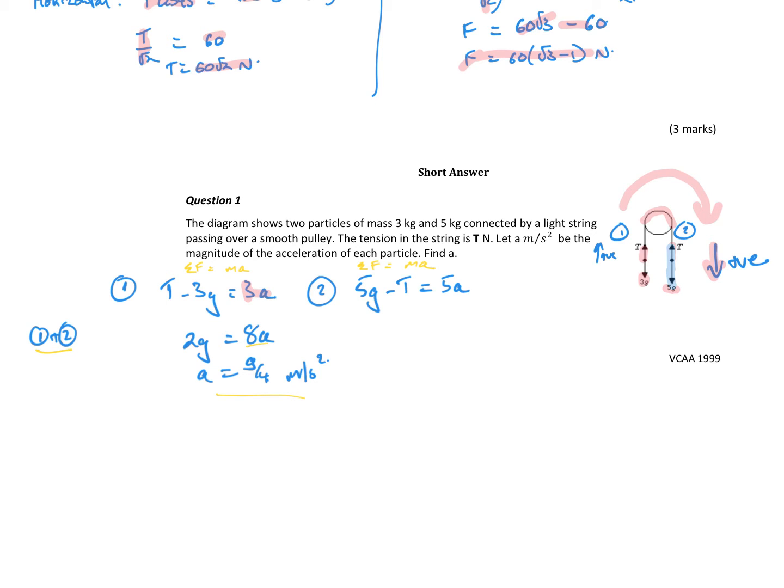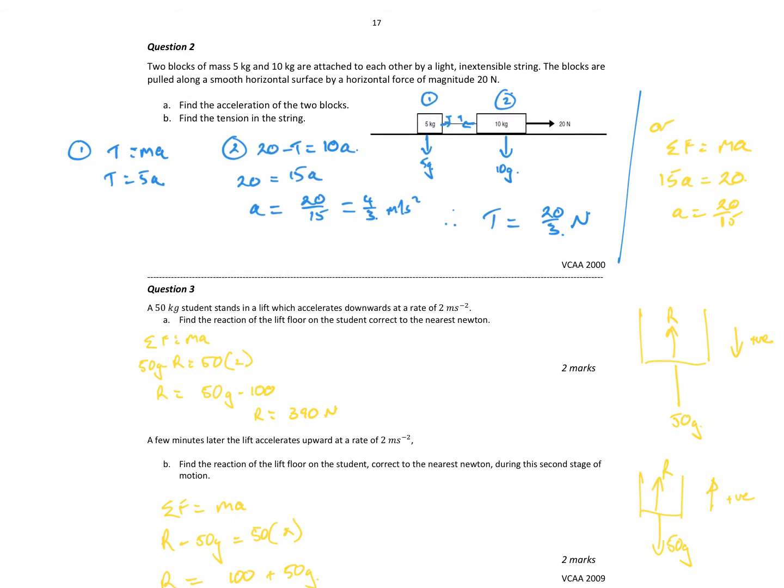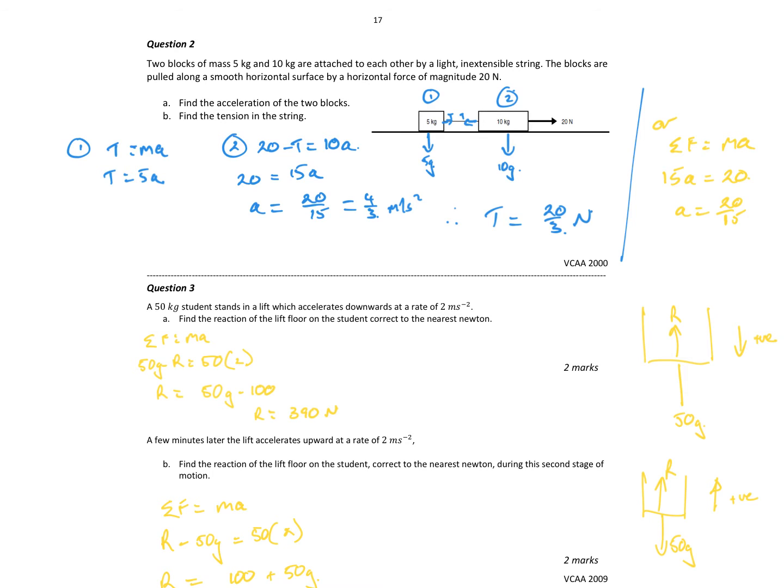Alright, same sort of thing. I've got two blocks, 5 kilogram and 10 kilogram, attached by a light inextensible string. Blocks are on a smooth surface so there's no horizontal friction. There's a horizontal force of 20 newtons. Particle two's got a 10g force acting down, a normal force acting up, and the tension in the string acting to the left. The 5g block, system two, it's got a 5g force acting down and also a tension in the string.